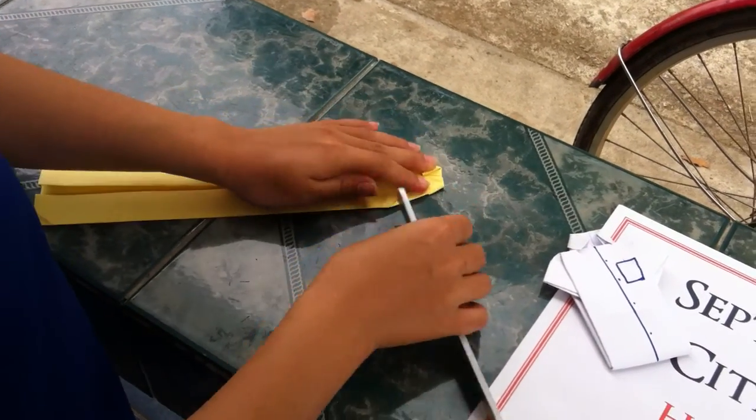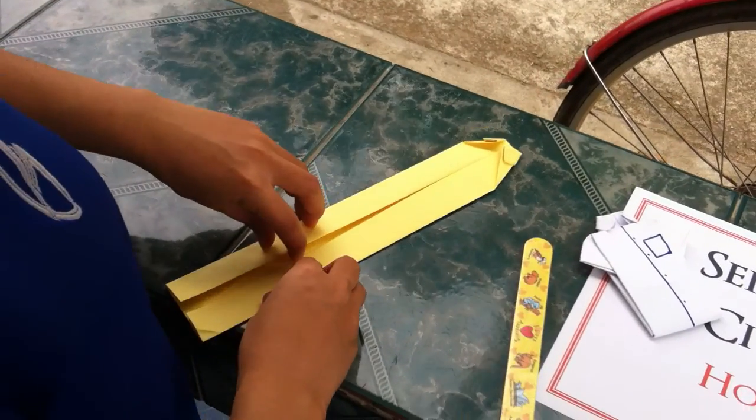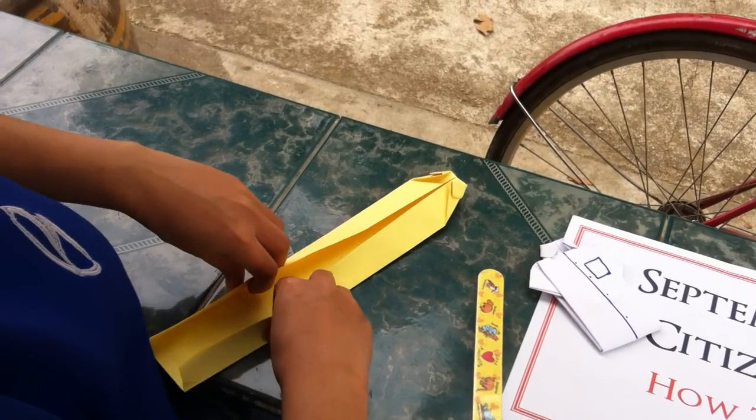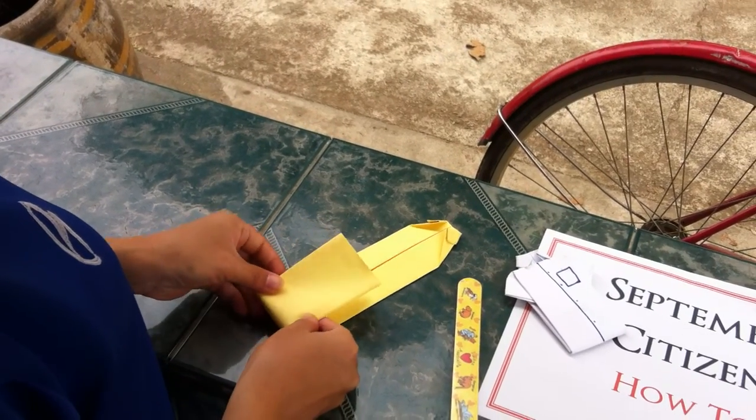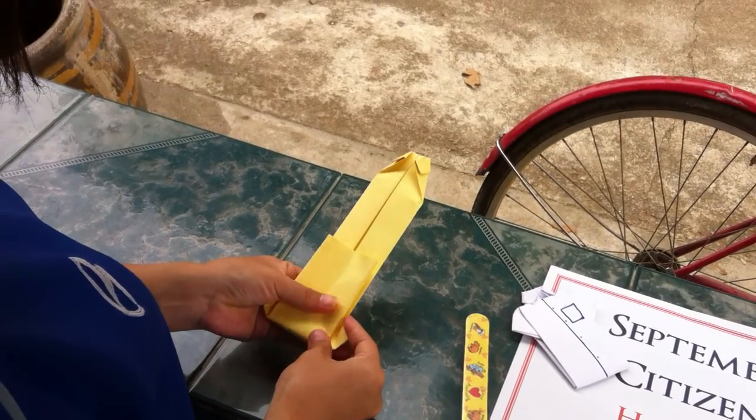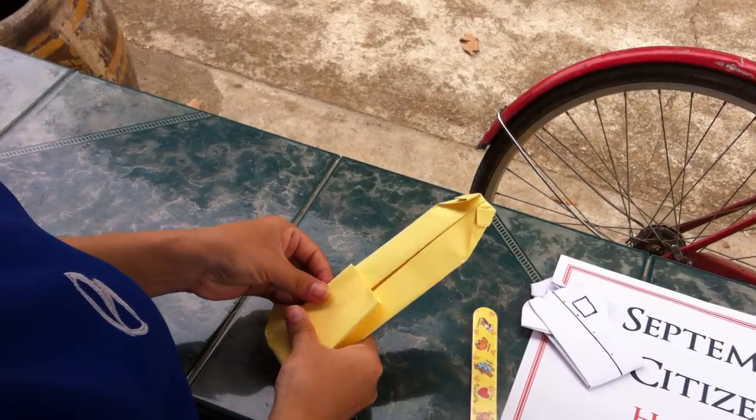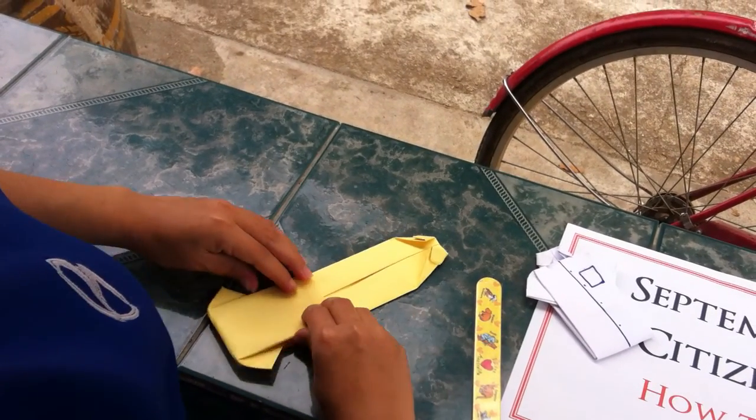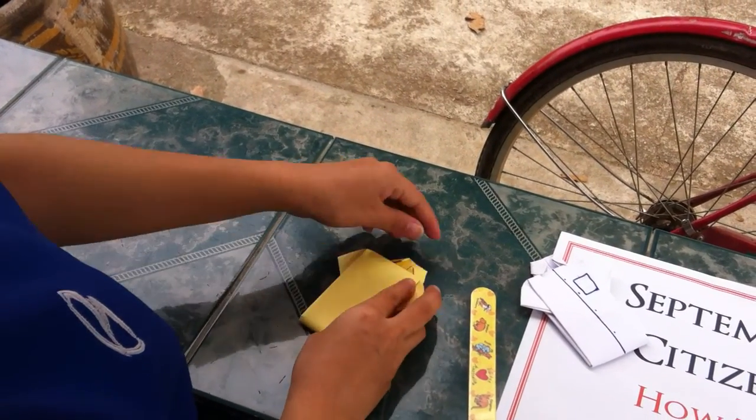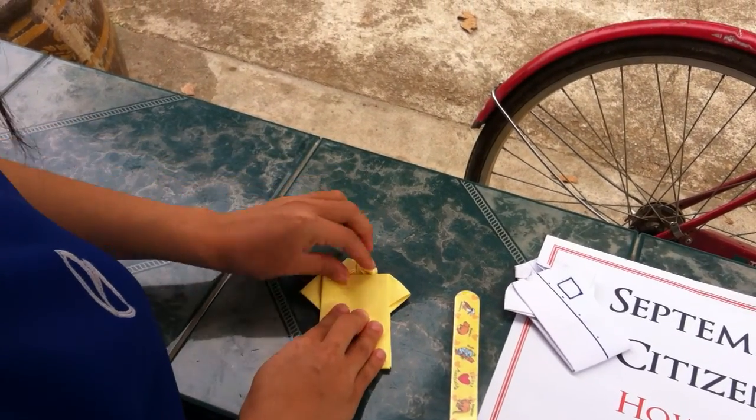Like that. And then fold. Take off the corner like that. Both sides. And there, pull into this corner.